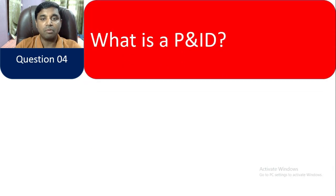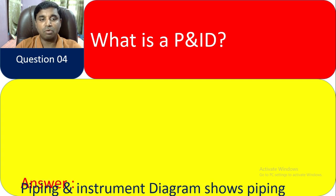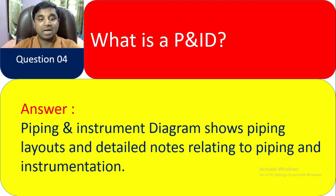Question 4: What is P&ID? P&ID stands for Piping and Instrument Diagram. It shows piping layouts and details, notes relating to piping and instrumentation. In a P&ID you can get all details related to engineering piping and instrumentation — what are the requirements for a particular line.